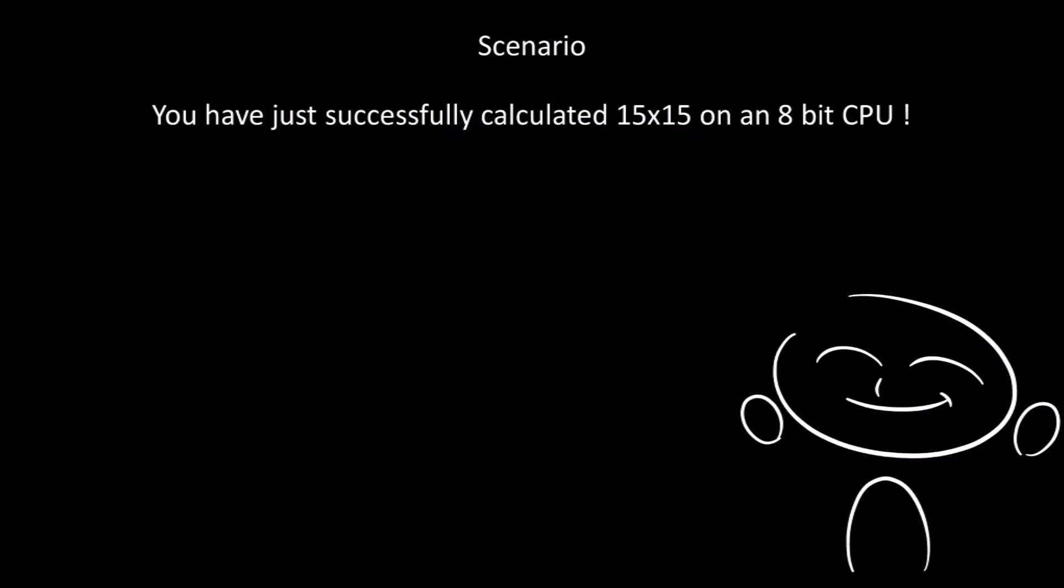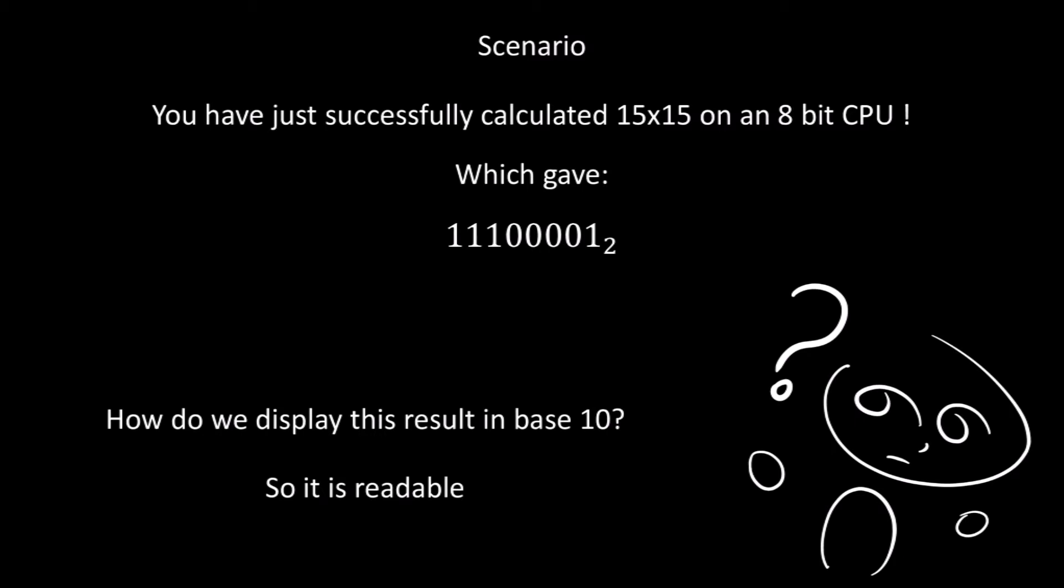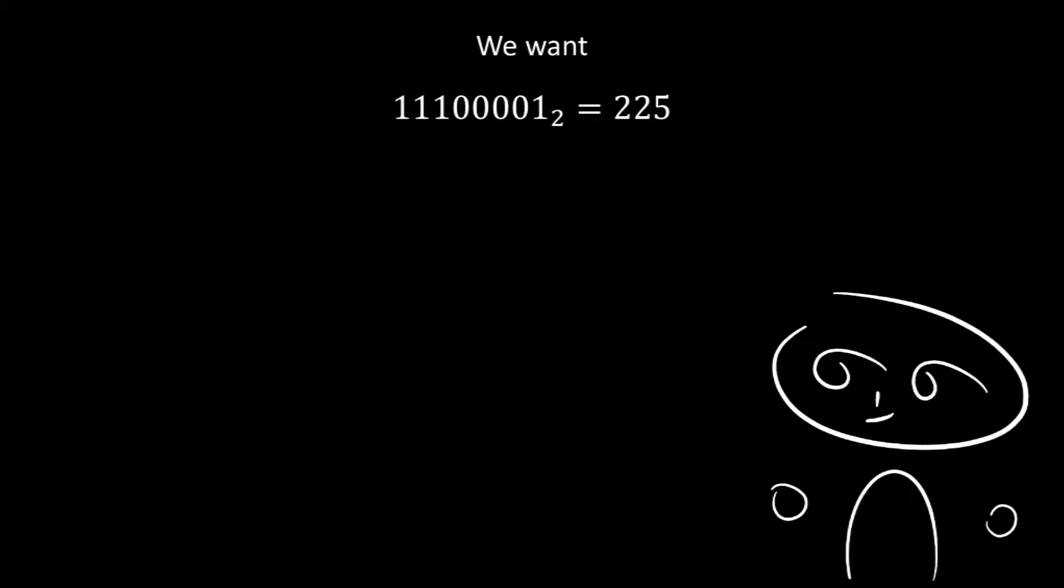So let's start with this scenario. You have just successfully calculated 15x15 on an 8-bit CPU, and you got this as your answer. We know that this answer is correct, because we can add 128, 64, 32, and 1, and we get 225, which is the correct answer. But how do we get the CPU to do this conversion for us? So how do we make the CPU convert this binary value into base 10, so that it can be easily read?